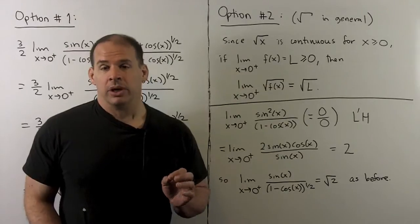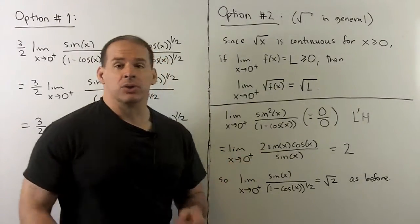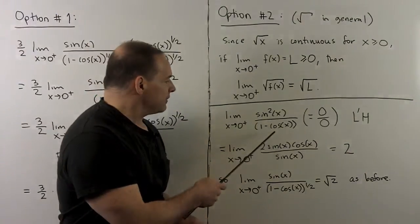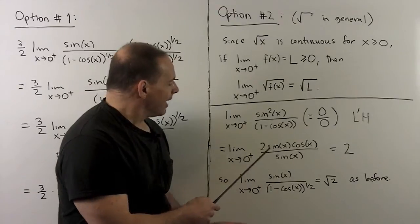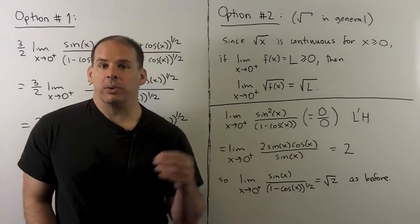So I evaluate, and we see that we get zero over zero, so we can bring back L'Hôpital's rule. We take our derivatives, then we see the sines cancel out. I have two cosine x. We evaluate at zero, we get a two.